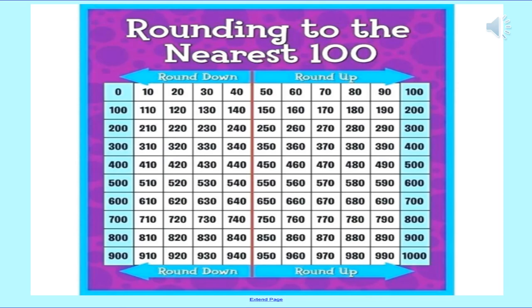Now let us look at the rounding to the nearest hundred chart. As we have a shortcut for rounding to the nearest ten, we also have a shortcut to round to the nearest hundred. While rounding to the nearest ten we were looking at the ones place digit, but to round to the nearest hundred we look at the tens place digit. If the tens place digit is one, two, three, or four, we round down. If the tens place digit is five, six, seven, eight, or nine, we round up.